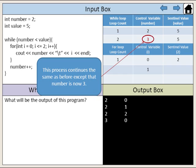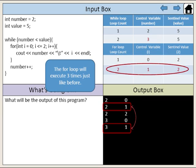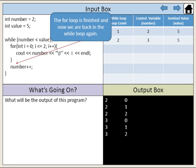This process continues the same as before, except that number is now 3. The for loop will execute 3 times just like before. The for loop is finished, and now we are back in the while loop again.